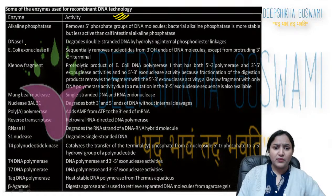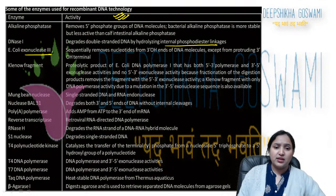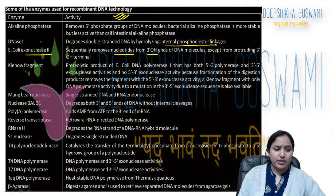E. coli Exonuclease III degrades double-stranded DNA by hydrolyzing internal phosphodiester linkages. It sequentially removes nucleotides from the 3'-OH ends of DNA.